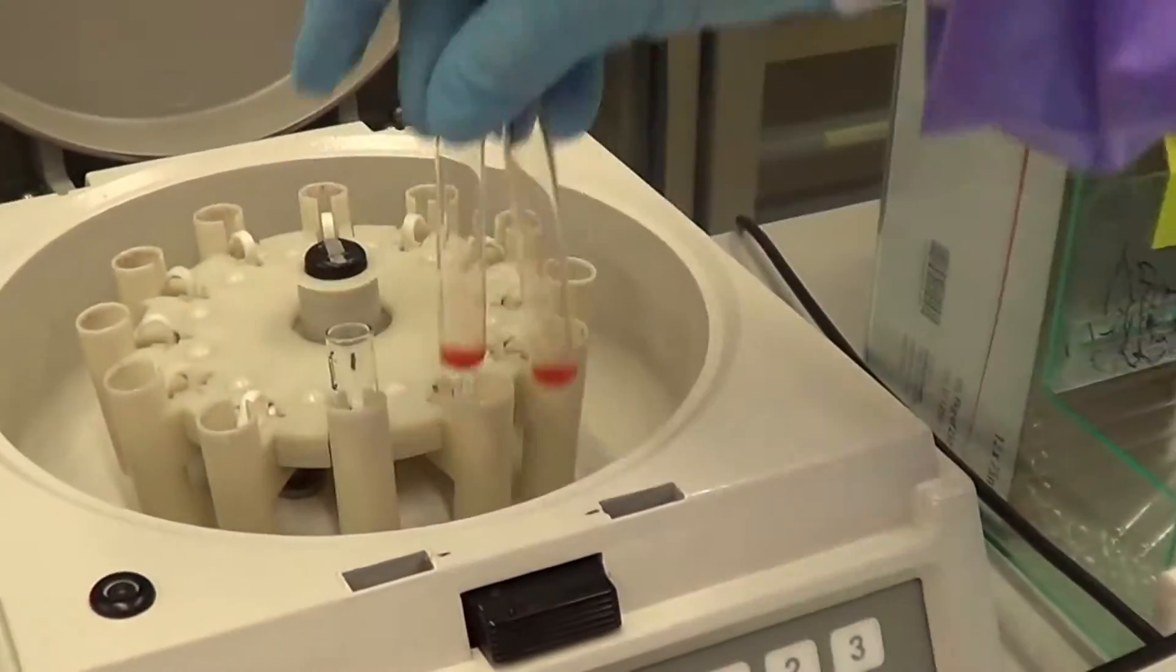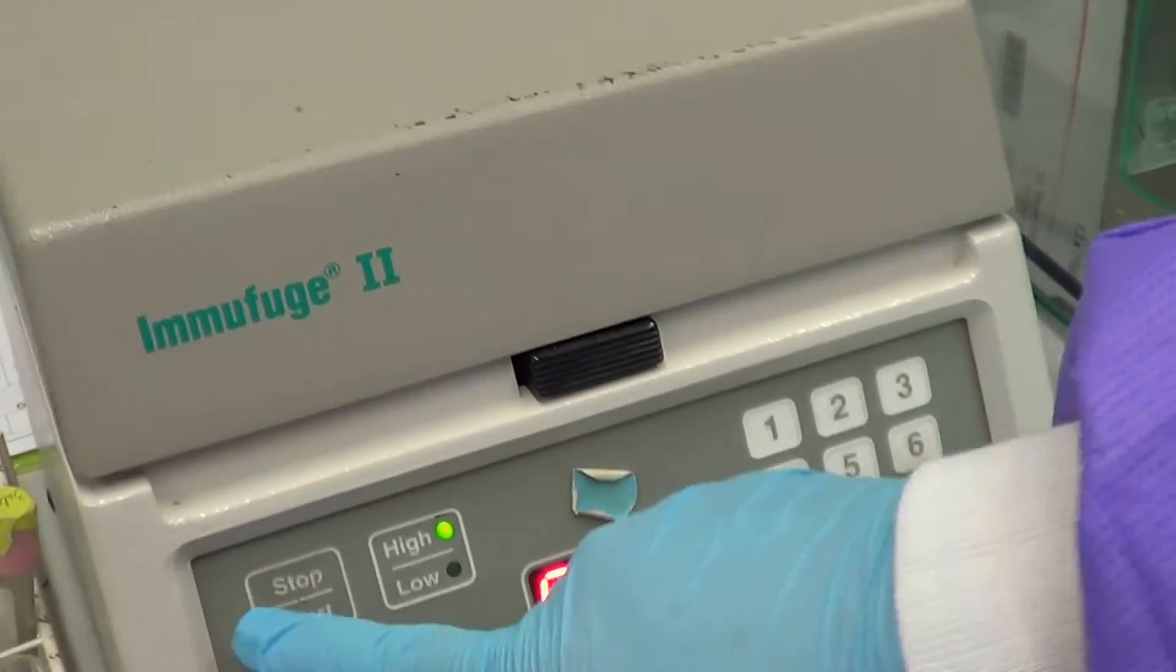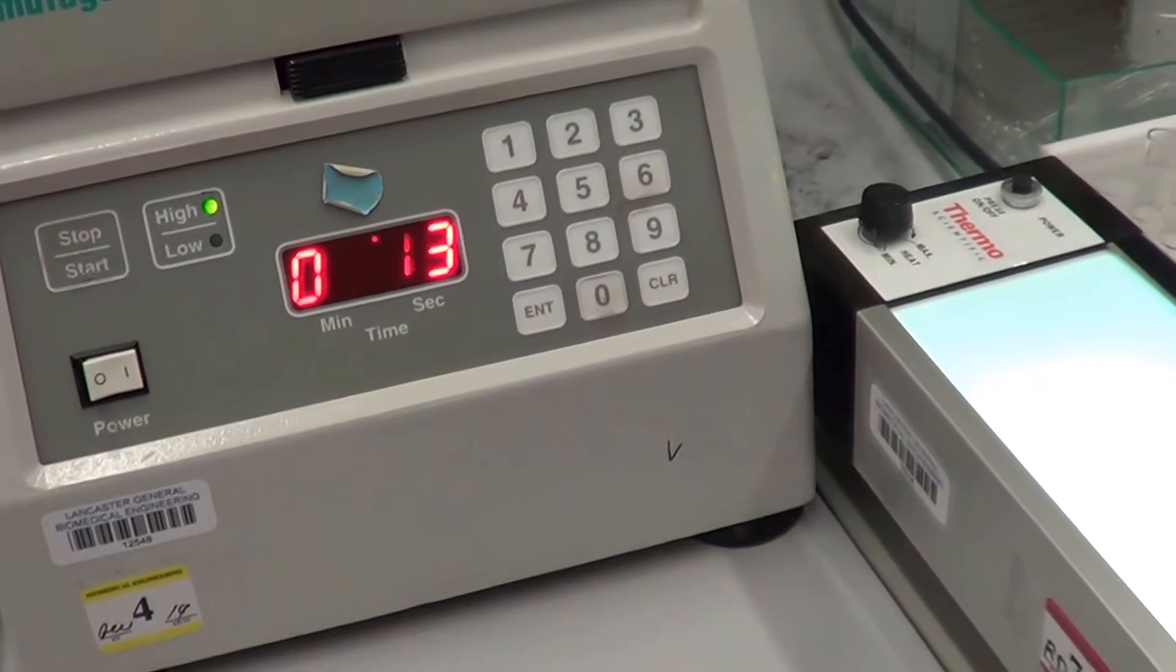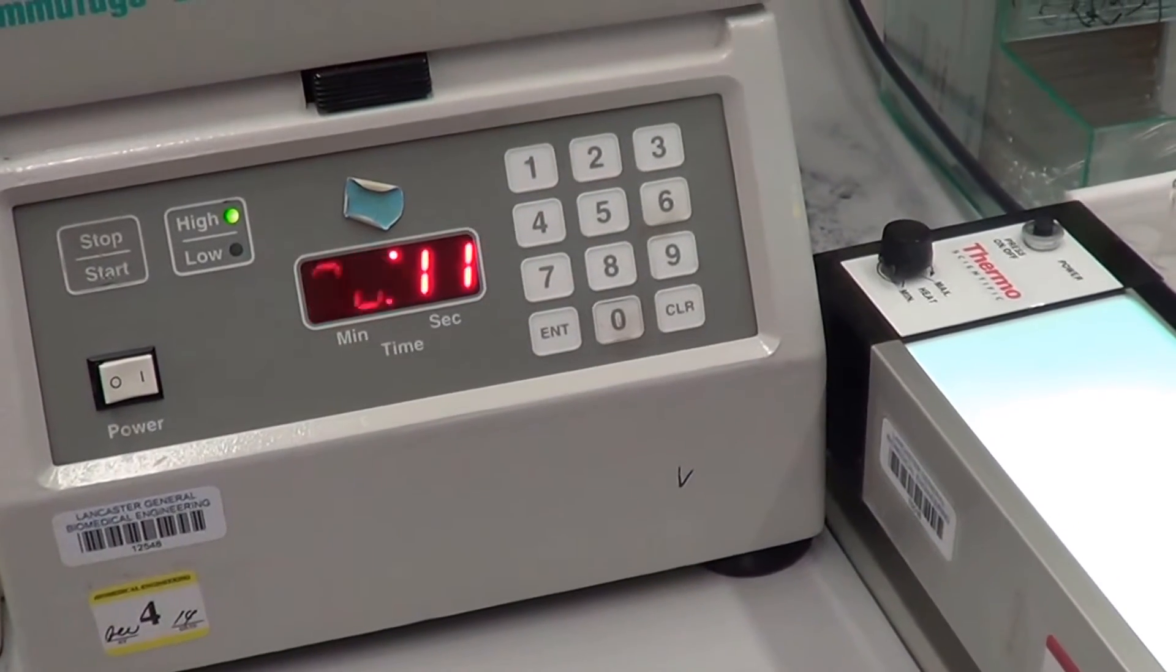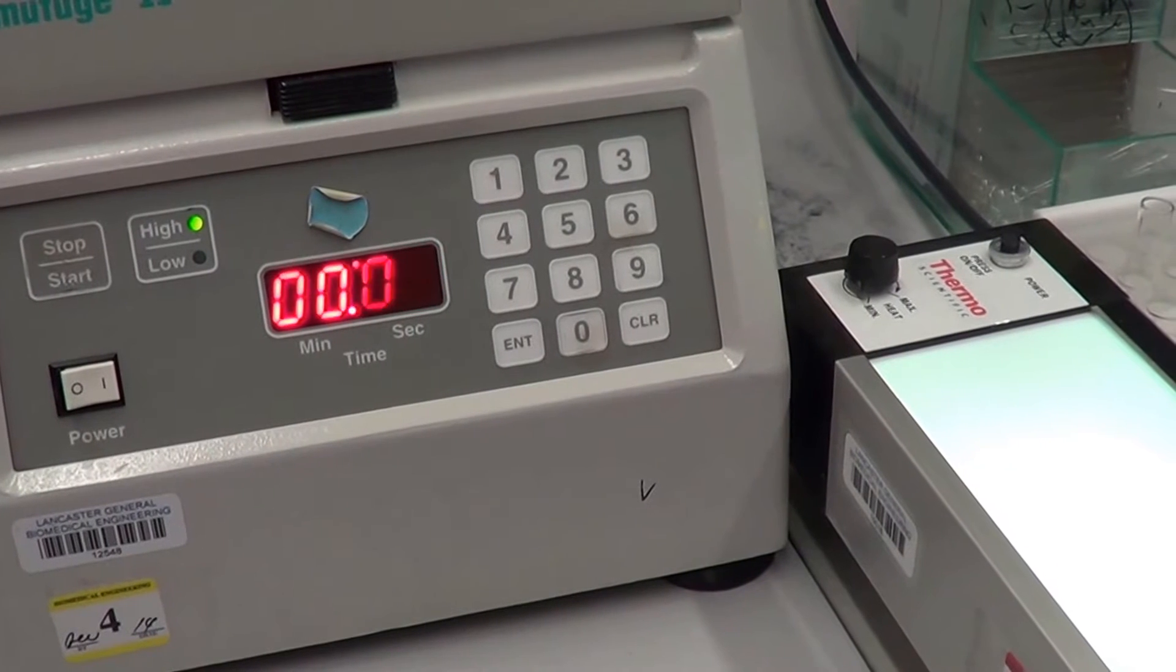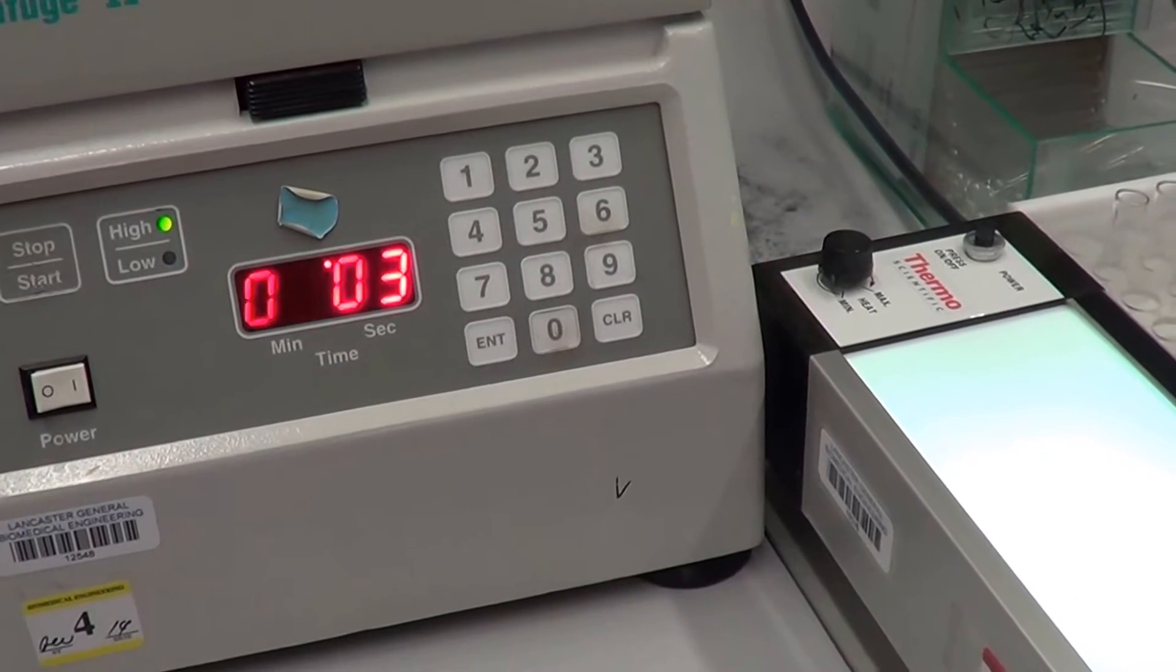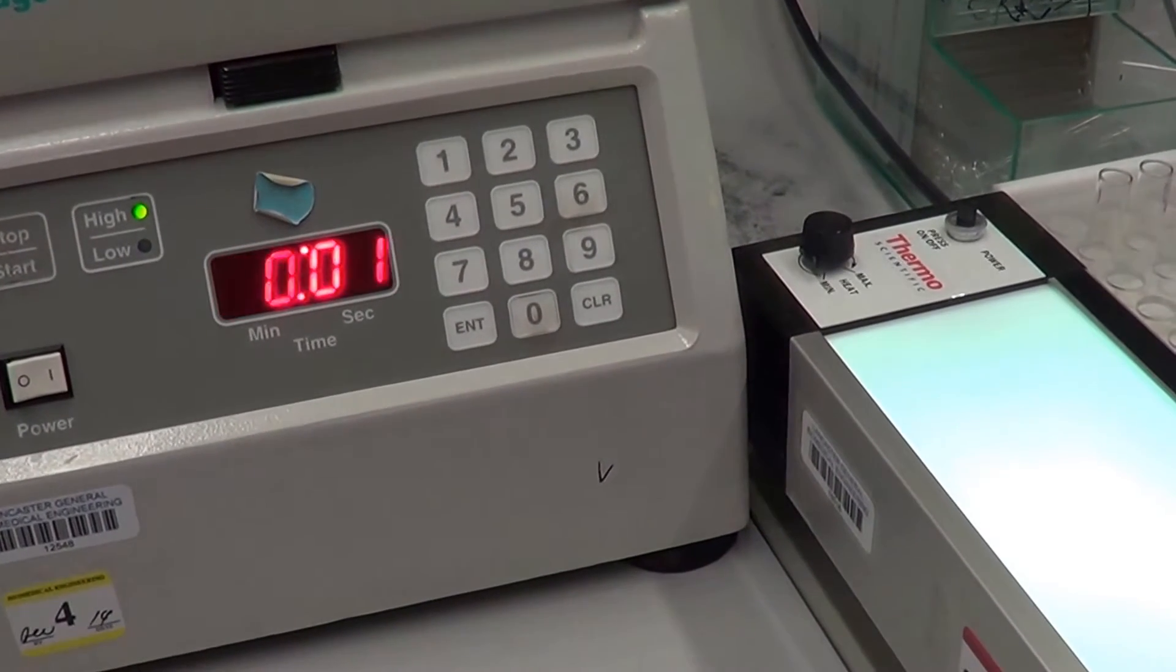You spin them. This is a quality control test. The anti-IgG that was added should be free to bind onto the check cells that are coated with IgG.